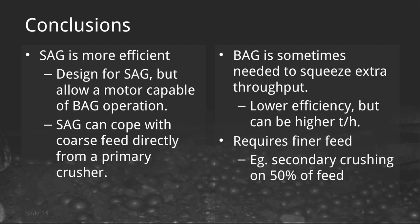SAG mills are also going to be cheaper to install because they can cope with the coarse feed that comes directly from a primary crusher — that's another benefit: lower capital cost. BAG mills are sometimes needed to squeeze extra throughput through; they will be lower efficiency but can achieve higher throughput than a SAG design. They generally require finer feed, which usually means secondary crushing — though not necessarily 100% of the ore. The example at Mount Milligan is secondary crushing about 50% of the ore, which is enough to give a BAG mill feed that can run at high power draw and high throughput.